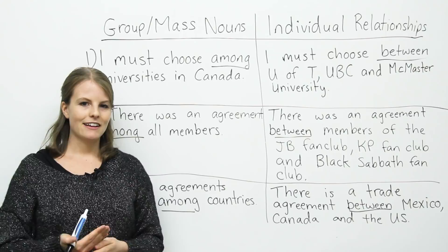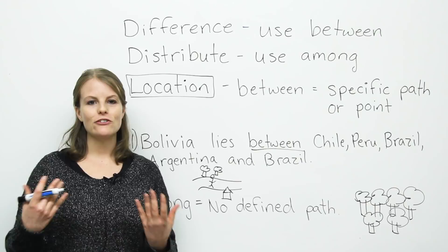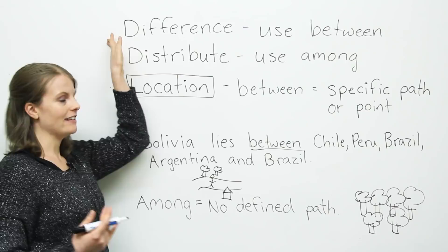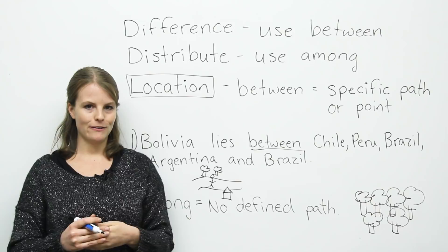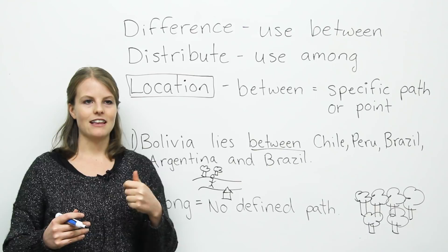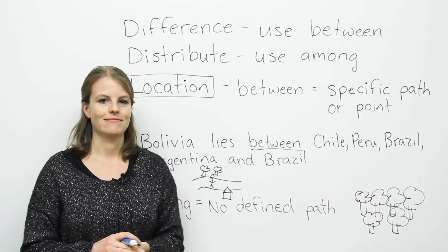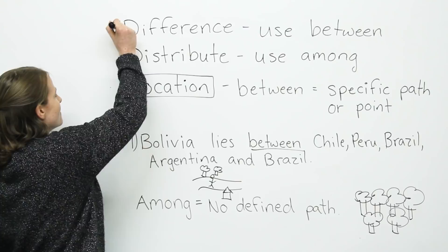Now let's look at some easier rules. One easy rule: when you use the word difference in a sentence, use between. For example, 'There is a difference between the Canadian, the Australian, and the New Zealand accent.' Another example: 'There is a difference between DVDs, Blu-ray discs, and VHS tapes.' So anytime you see the word difference, use between.